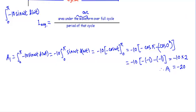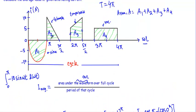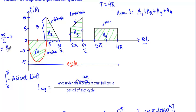Now I will calculate area A2, the area covered by the triangle. The height of this triangle is 10, and this will be the base. The base equals 3π/2 minus π, which equals π/2. So area A2 equals half times base times height, which will be equal to 2.5π.